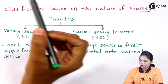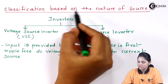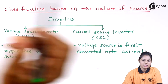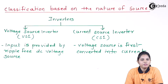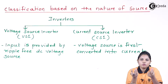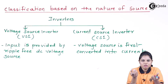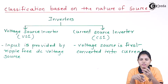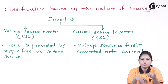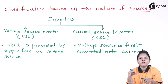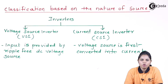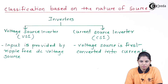First of all, inverters can be classified based on the nature of the source. The source can be a voltage source or it can be a current source. You need to have some voltage source or a current flowing through the circuit. Then only the thyristors used in the circuitry will act as closed switches, allowing current flow through the device. Once conducting, you can convert your DC voltage into AC form.